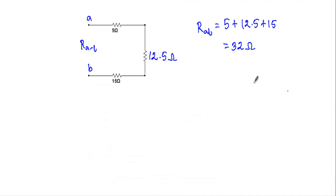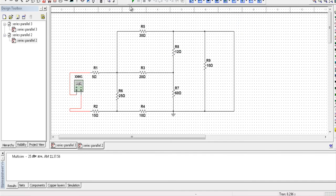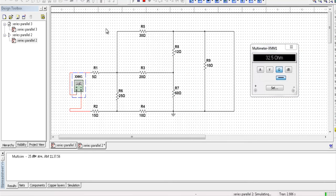In my final circuit, RAB is the series connection of 5 ohm, 12.5 ohm, and 15 ohm. So RAB = 5 + 12.5 + 15 = 32.5 ohm. Let me run a simulation to show the validity of this circuit analysis. Running the simulation, you will see the ohmmeter is showing a reading of 32.5 ohm. That's it, thank you.